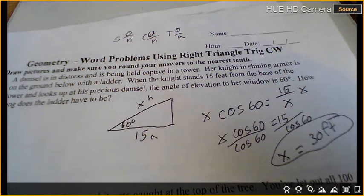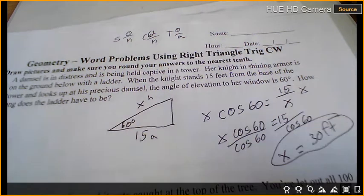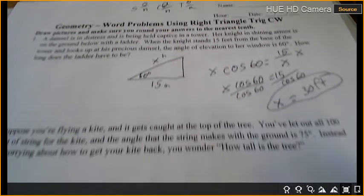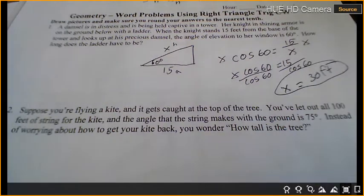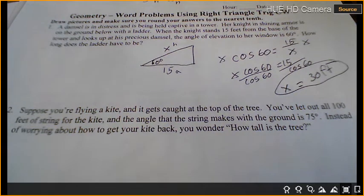Questions about that one? All right, I want you to try to set up the next one on your own. And then check with me. Suppose you're flying a kite and it gets caught at the top of a tree. You've let out all 100 feet of string for the kite, and the angle that the string makes with the ground is 70 degrees. Instead of worrying about how to get your kite back, you wonder how tall is that tree?